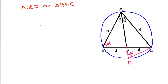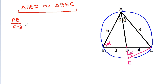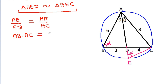And these two triangles are similar. That means AB by AD will be equal to AE by AC. And if we cross multiply, then AB times AC will be equal to AD times AE.